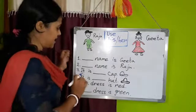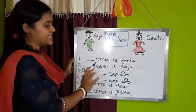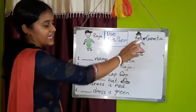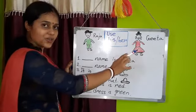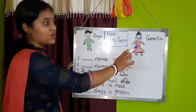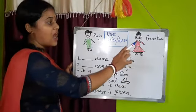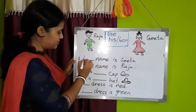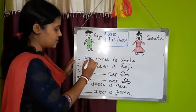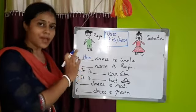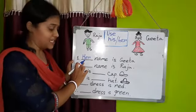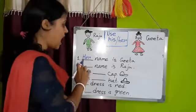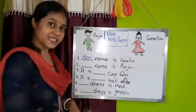Now come here, number one. Her name is Geeta. Whose name is Geeta? Geeta. She is Geeta, so we use her for a girl. Now write down her. We have to start the sentence with a capital letter. That's why I have written H capital. Her name is Geeta.